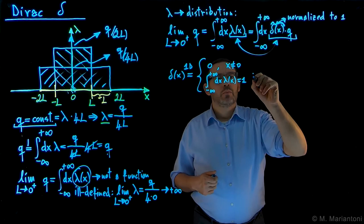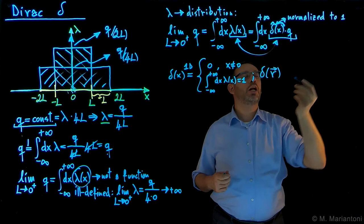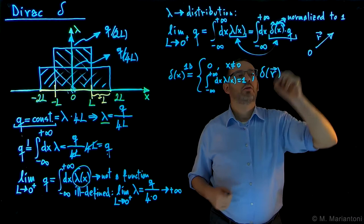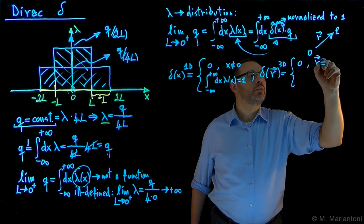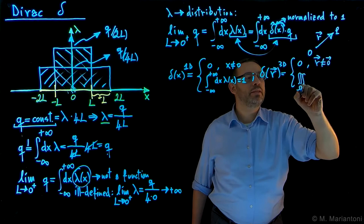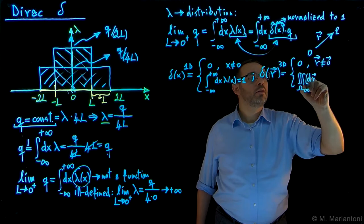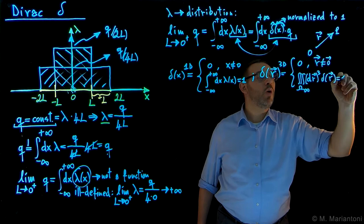In 3D, the definition is with respect to the generic vector r from any origin O. Delta of r in 3D is defined as zero when r is different than the zero vector, and such that the volume integral over the entire space of delta of r d³r equals one.